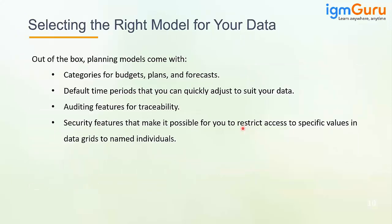There are additional out-of-the-box features available for planning models. When you create a planning model, categories like budget, plan, and forecast are included, and default time periods are generated — useful for planning operations. Auditing features are available for traceability, so you can see who changed or modified data. There are also security features that allow you to restrict access to specific values in data grids for named individuals, such as data locking — all of these are readily available when you create a planning model.